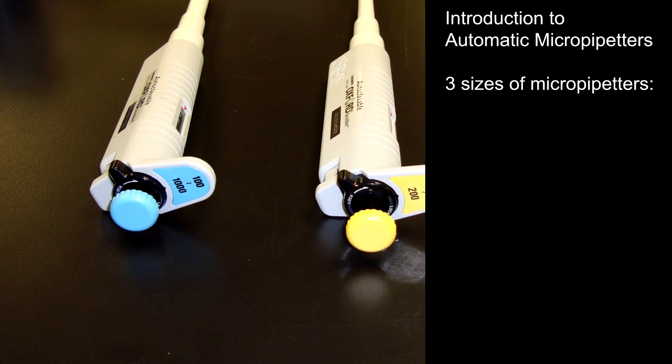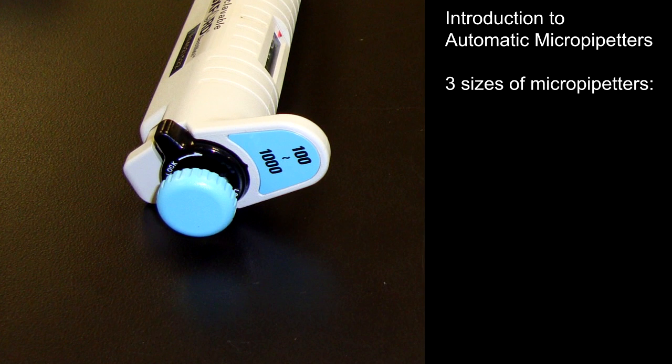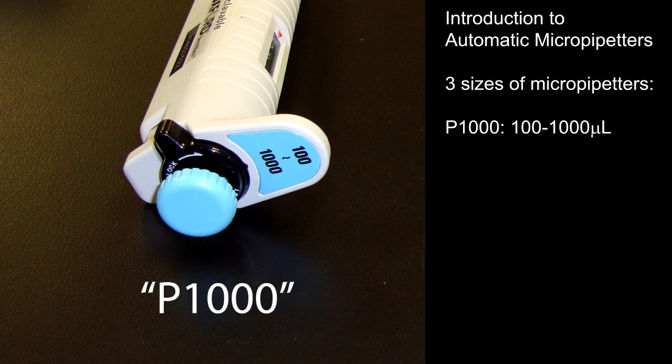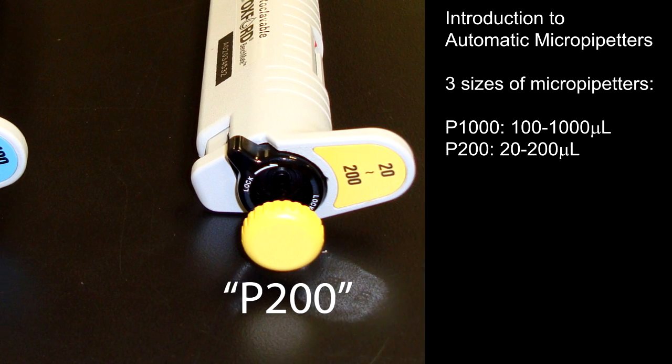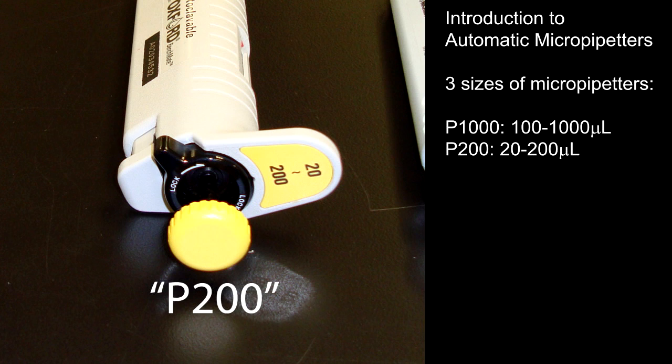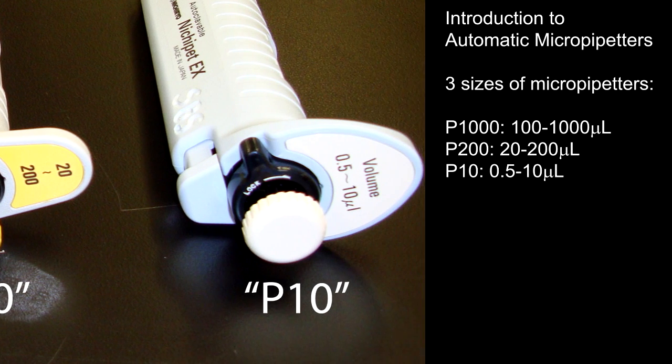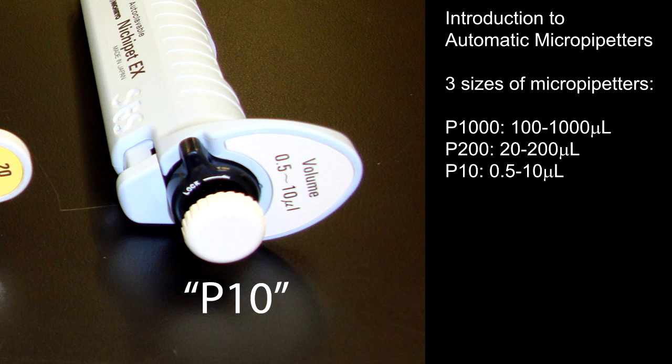You should be familiar with operating three sizes of micropipettors: the P1000 for 100 to 1000 microliter volumes, the P200 for 20 to 200 microliter volumes, and the P10 for 0.5 to 10 microliter volumes.